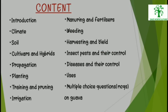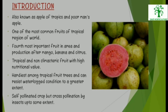Given below are the contents of my presentation. Introduction: Guava is also known as apple of tropics and poor man's apple. It is one of the most common fruits of tropical regions of the world, and the fourth most important fruit in area and production.